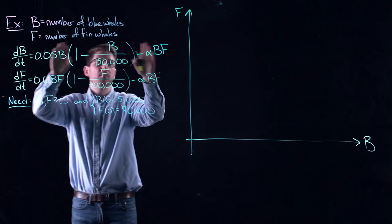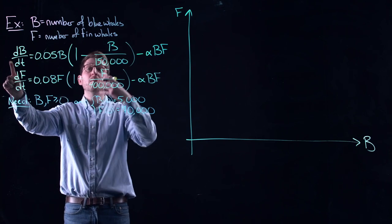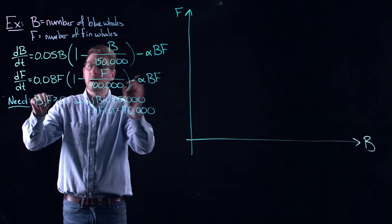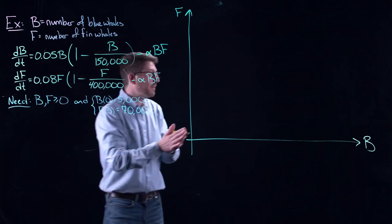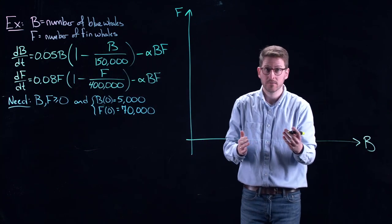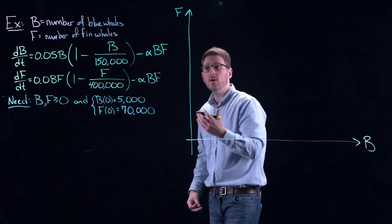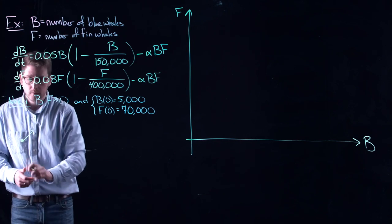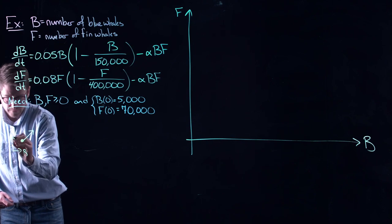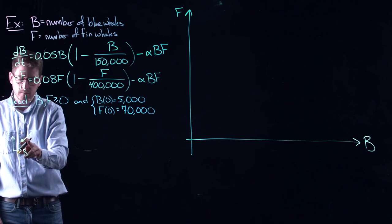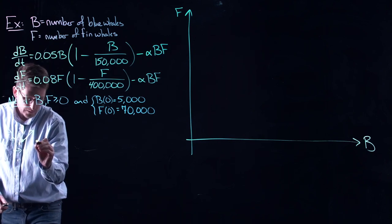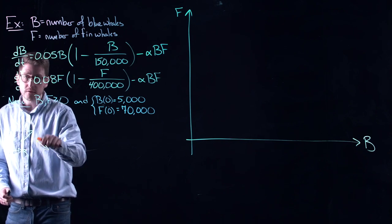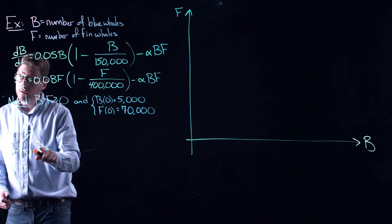That vector is these derivatives. And we know that vectors point in certain directions. For example, if I put in a value of B and F and this thing is positive, that tells me that my blue whale population is increasing at that point. Similarly, I could do the same thing down here. If I put in B and F maybe and this thing is negative, then that tells me that my fin whale population would be decreasing. And I can use vectors to denote increasing or decreasing. So for example, if I have a vector that looks like this in the BF plane, this is both of them increasing.